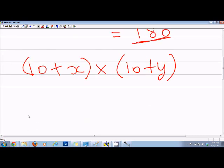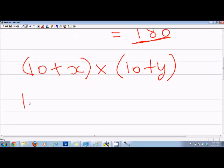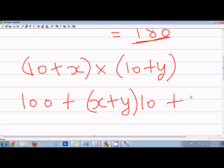what you will get is 100 plus x plus y and this x plus y will be multiplied by 10 and then you have x into y.